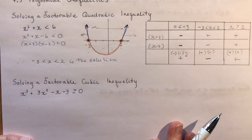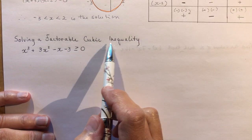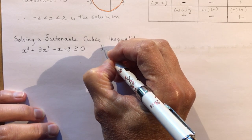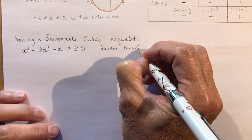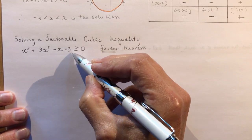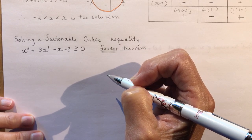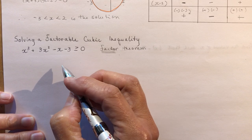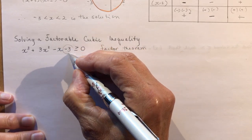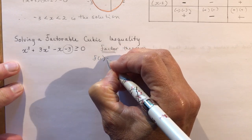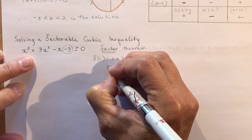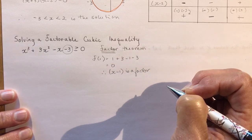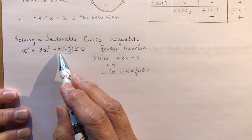Now let's look at solving a factorable cubic inequality. The first thing you need to do with a cubic function is apply the Factor Theorem from chapter 3: if you can find a number that sets the polynomial equal to zero, then x minus that number is a factor. Let's try f(1): 1 + 3 − 1 − 3 = 0, so x − 1 is a factor.